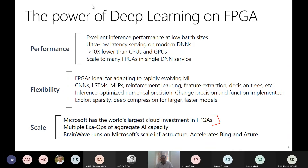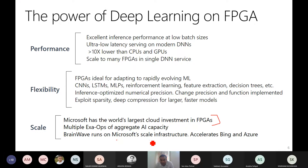Microsoft has the world's largest cloud investment in FPGA and it provides multiple exa-scale operations. EXA is 10 to the power of 18, so this is 10^18 operations of aggregate capacity. Brainwave runs on Microsoft's scale infrastructure and accelerates Bing and Azure. FPGAs are ideal for adapting to rapidly evolving machine learning.